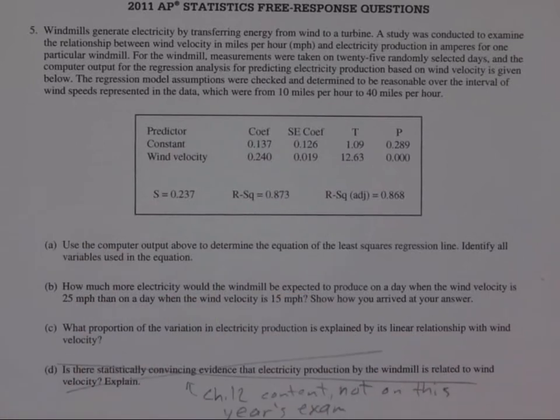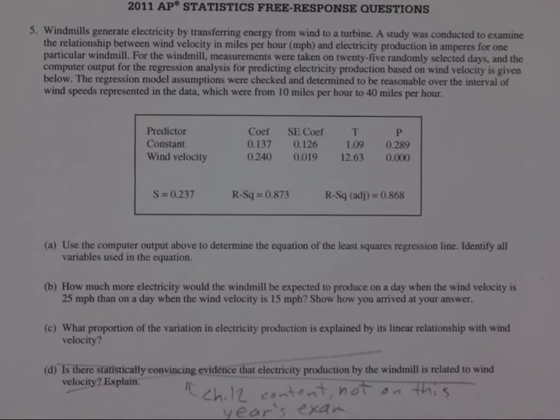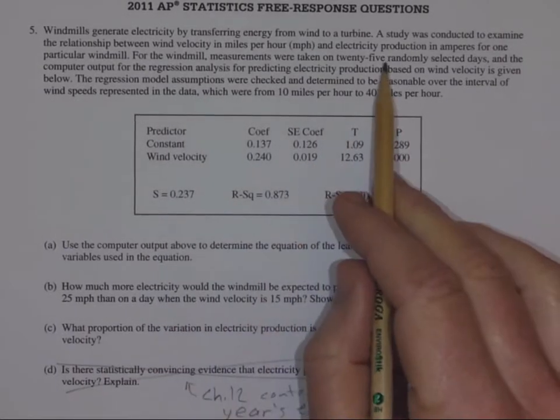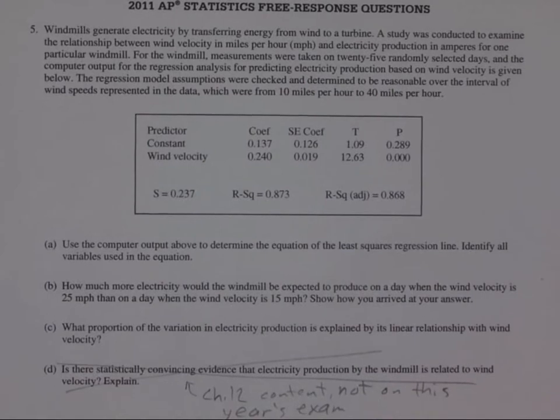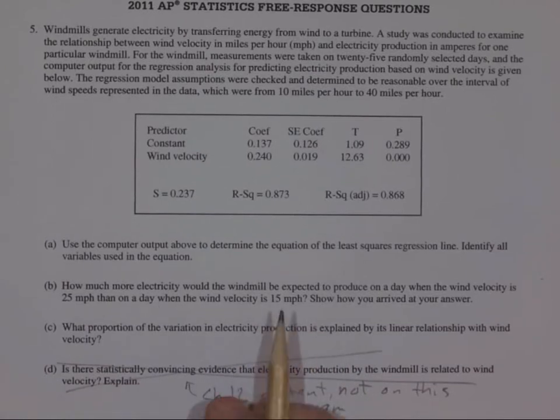Now you have to understand how to read these computer printouts. This is the most popular way that linear regression data is going to be presented to you. The raw data, if you were to see it, would be two lists of numbers and it would be paired data. You'd have a wind velocity and the amount of electricity that produced. You'd have a number of numbers, in this case 25. So there's 25 pairs of numbers. And of course we could put that, if we had it, we'd put it in list one and list two and do linear regression with it.